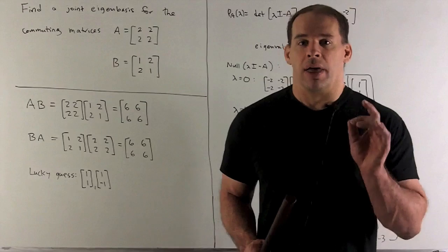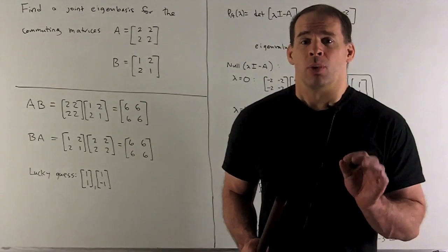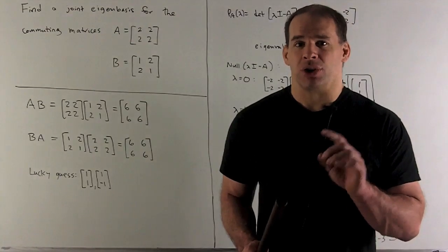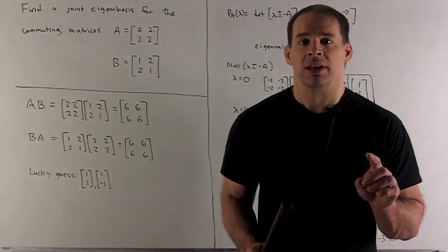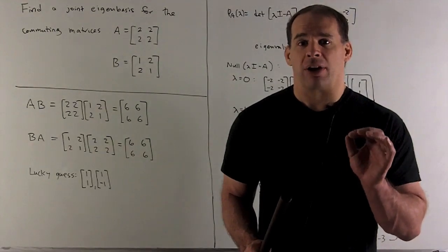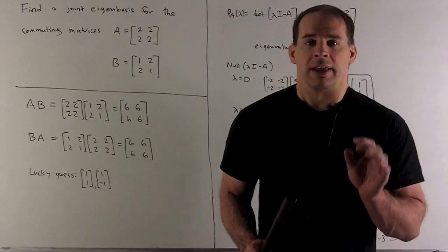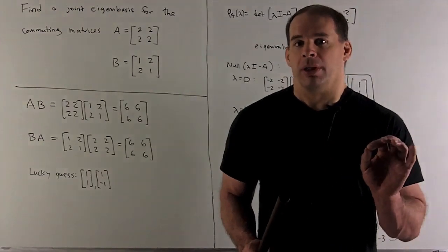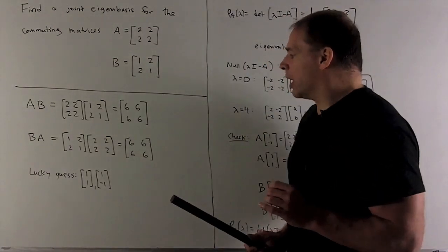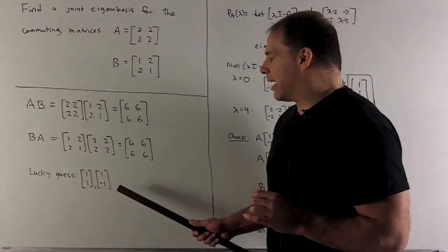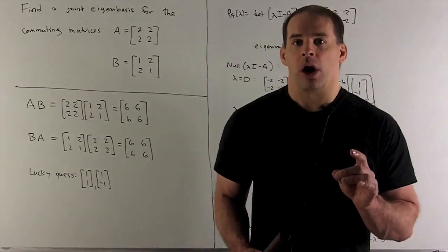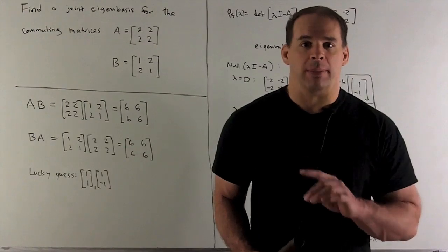If I want another eigenvector for both of them, since we have real symmetric matrices, eigenvectors that go with different eigenvalues for a fixed matrix are going to be orthogonal. So all I need to do is look for a vector orthogonal to [1, 1]. We can go with the joint eigenvector [1, -1], and then we have our joint eigenbasis.